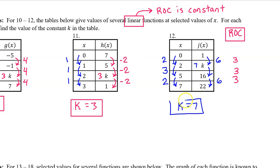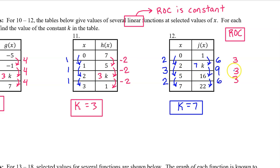Let's continue to check: to get an average rate of change of 3 for the next interval, the change in output must be 9. Nine divided by 3 gives 3. A change of 9 does take us from 7 to 16, so we know this is right.